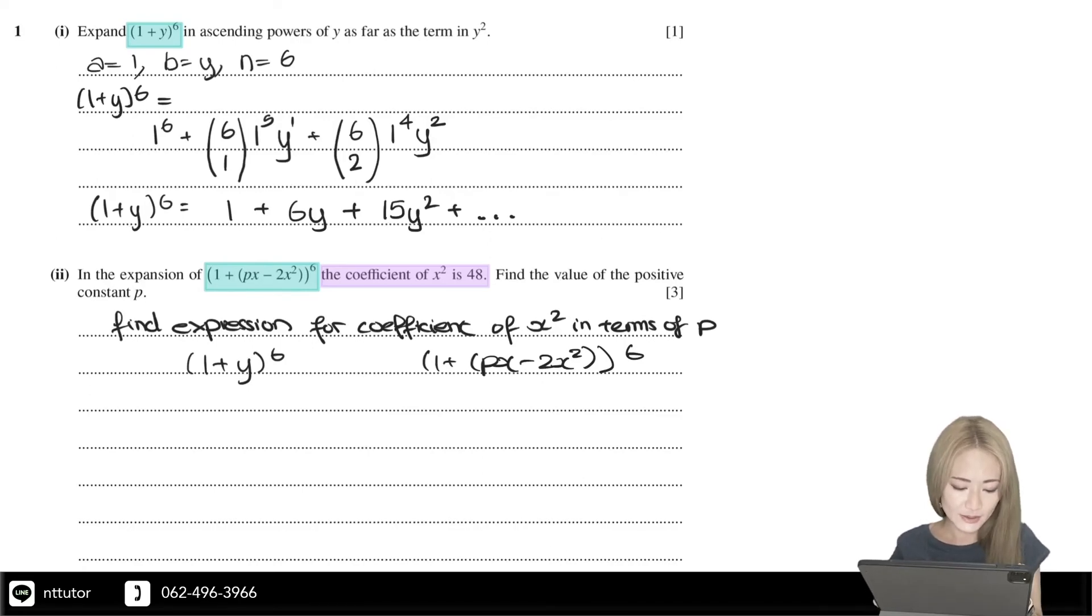We already expanded (1+y)^6. So if we let y be px - 2x², it's the same expansion, but you just need to replace the y with px - 2x².